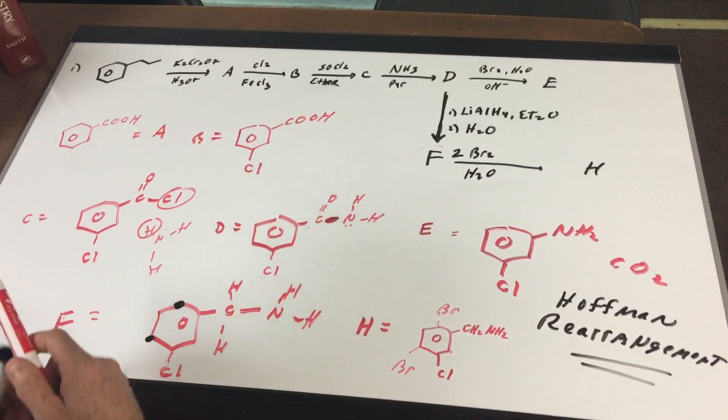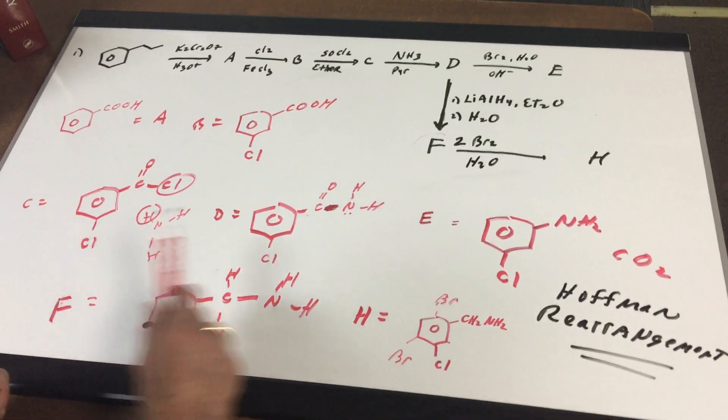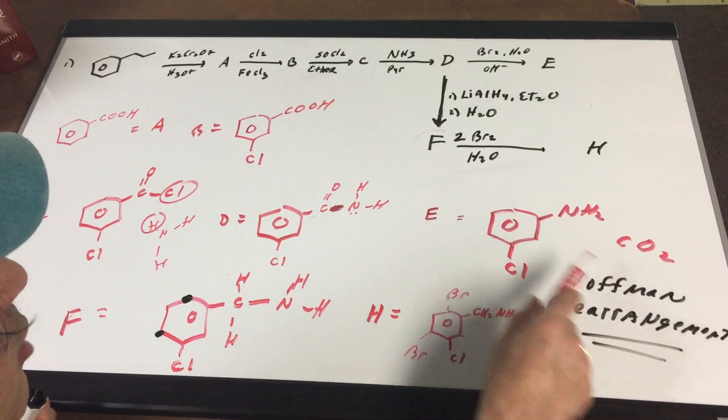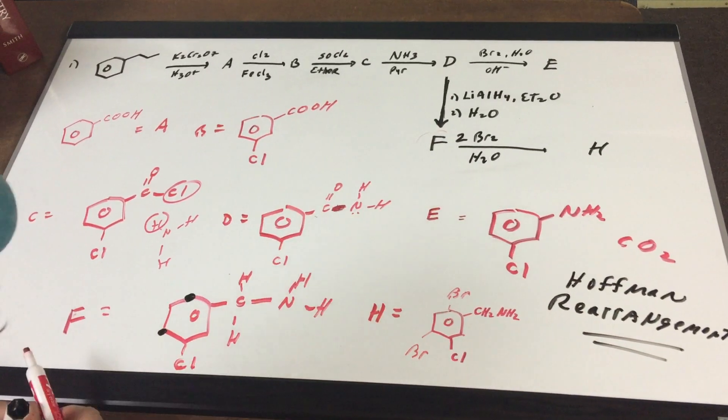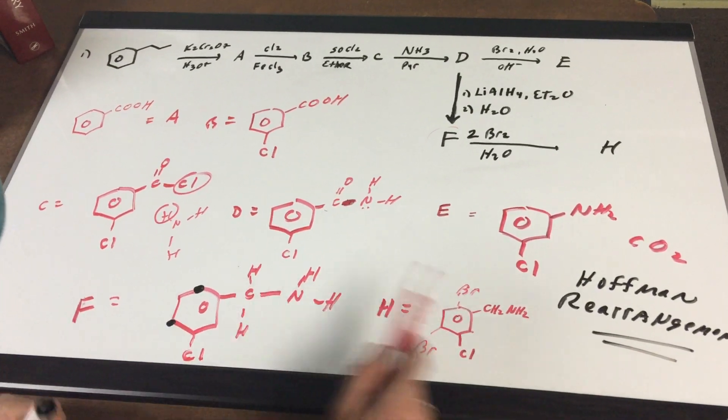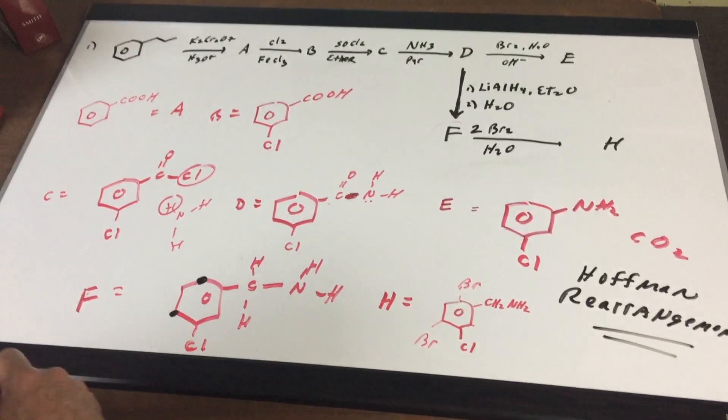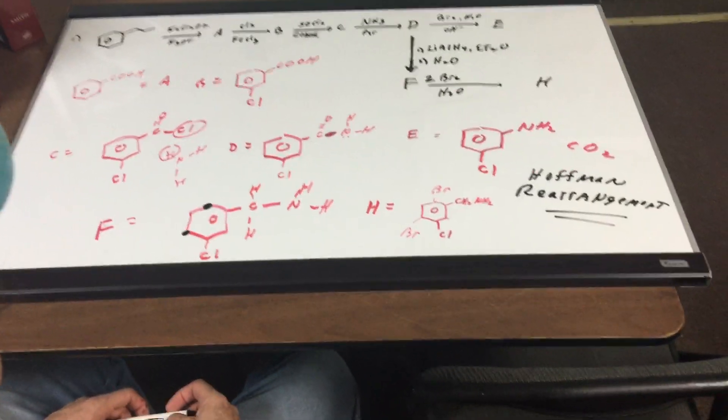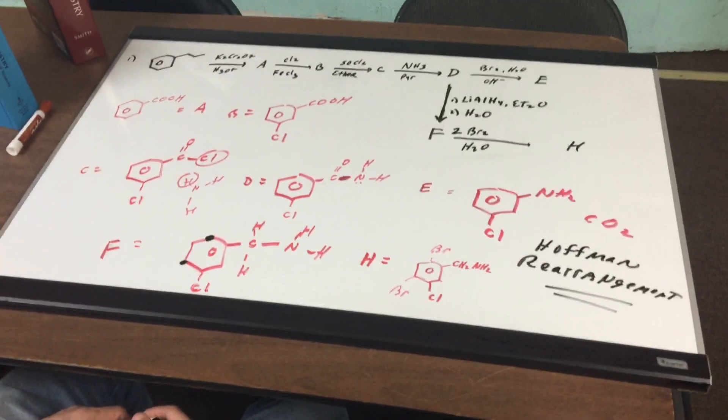So there you have it. In this sequence, A, B, C, D was straightforward. By the time you got to E, you had to do a Hoffman rearrangement. By the time you got to letter F, that's when you had to do the reduction of an amide and then you simply brominated it. That wraps this clip up. I hope this gives you some good understanding of some challenging questions. We'll see you again next time.